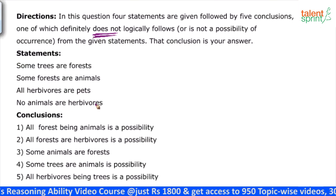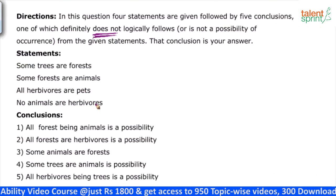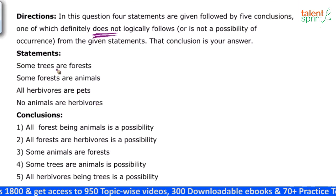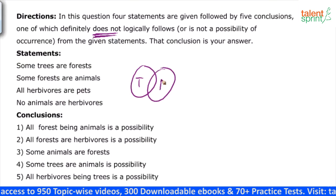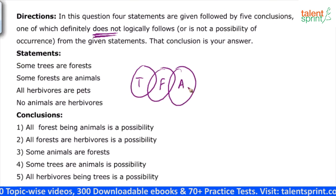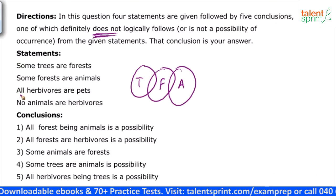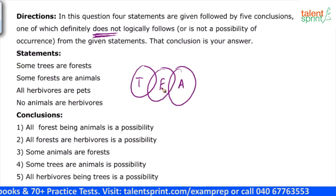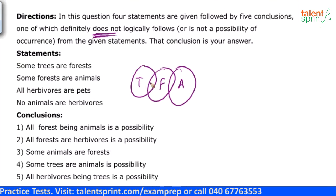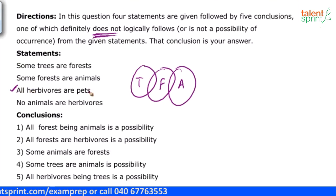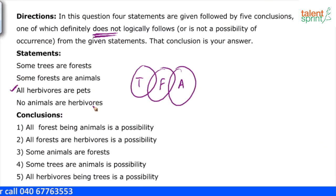Let's draw a diagram for this. I'm sure all of you have gone through the syllogism video and know the method to be followed for solving these questions. Some trees are forests, then some forests are animals. Now the third statement says all herbivores are pets, but so far in our diagram we have neither herbivores nor pets — it's only about trees, forests, and animals. So let's keep statement three on hold and move to the next one, because we will not be able to connect statement three with the first two statements.